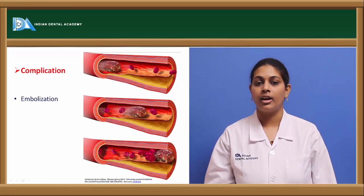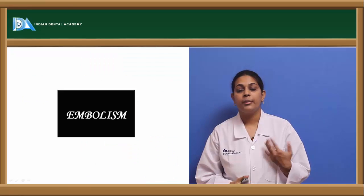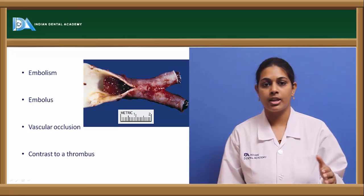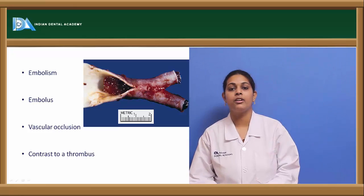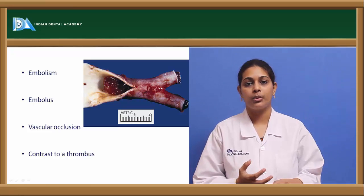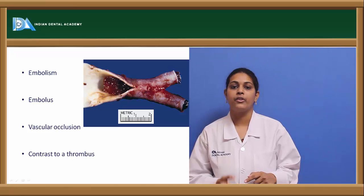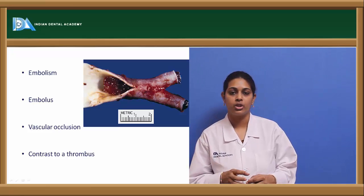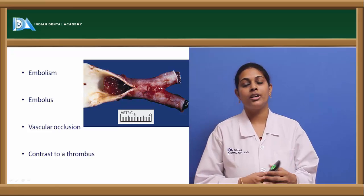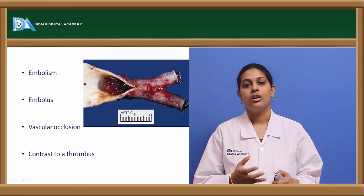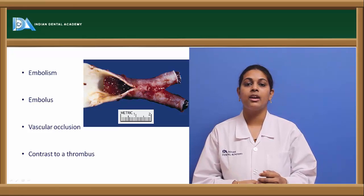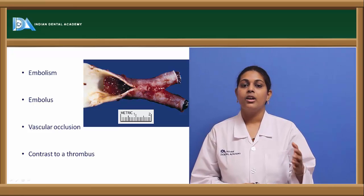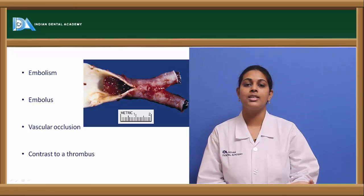The process of formation of emboli is known as embolism. Emboli is the plural form, while embolus is the singular. An embolus could be a clot, a fat globule, or gaseous content released during surgeries or obstetric conditions, resulting in occlusion of a blood vessel known as vascular occlusion. The key distinction between a thrombus and an embolus is that an embolus is a thrombus that has been detached from its site of origin and is being carried through the circulation.